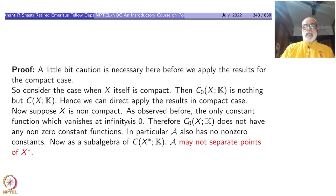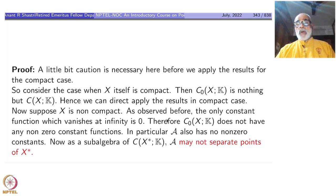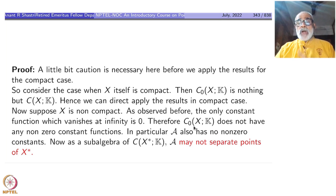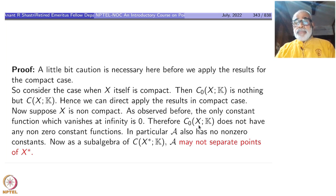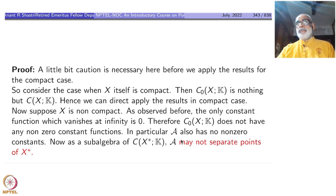A locally compact Hausdorff space is also a compact Hausdorff space in the special case, so we have to check the statement is correct in that case. Now come to the case when X is non-compact. As observed, the only constant function which vanishes at infinity is 0; therefore C₀(X,k) does not have any non-zero constant. Hence the regular Stone-Weierstrass theorem cannot be applied here — you have to take Gadi's version.